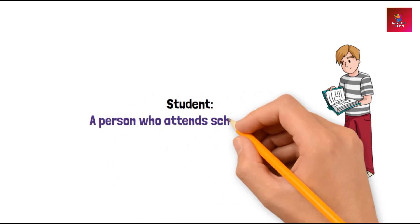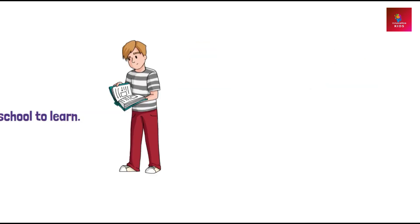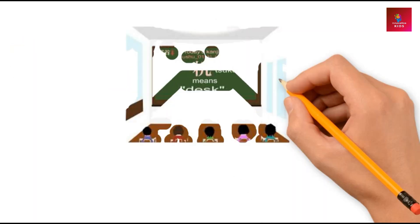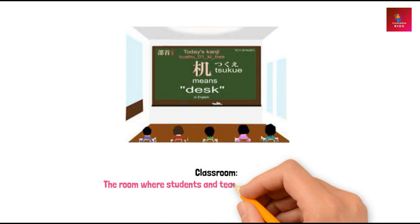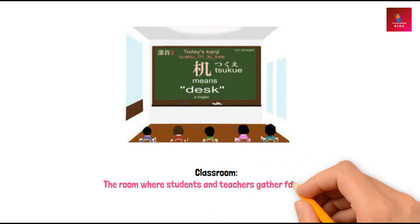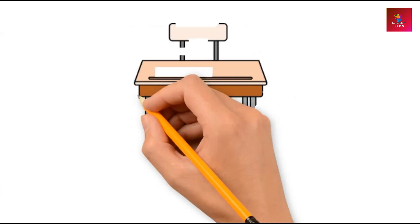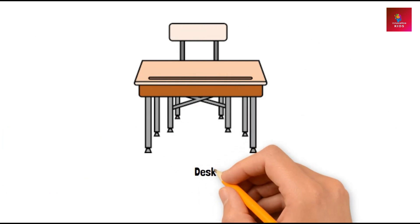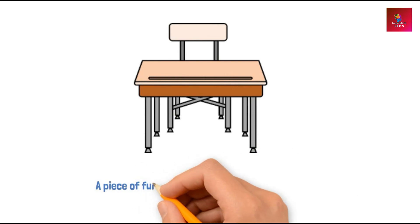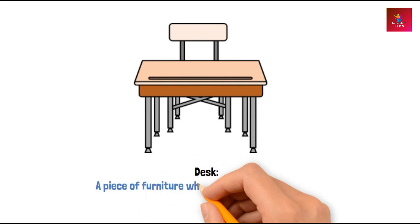Student: A person who attends school to learn. Classroom: The room where students and teachers gather for lessons. Desk: A piece of furniture where students sit and work.